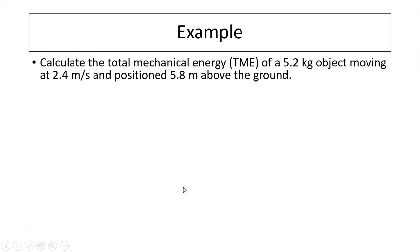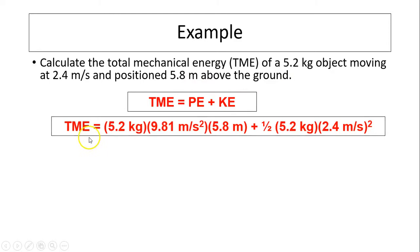Another example: calculate total mechanical energy of a 5.2 kilogram object moving at 2.4 meters per second and positioned 5.8 meters above the ground. So total mechanical energy is potential plus kinetic. Potential is MGH. So H, we usually define ground to be zero, so delta H is just 5.8.